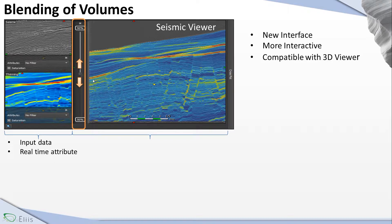If you want to have access to the seismic, you can just take this scroller here and go up. If you want to display more of the thinning, we just need to take the scroller and go down. Here we just display the seismic, but if you want, we can have access to real-time attributes. If you want to access those attributes, instead of no filter, we can click on this bar here, and we'll have access to a drop-down menu where we can choose amongst several attributes.